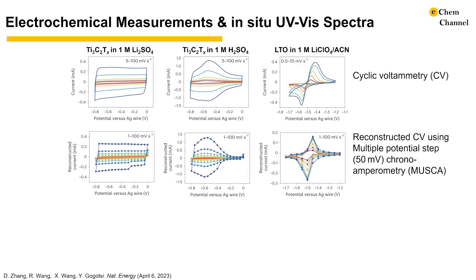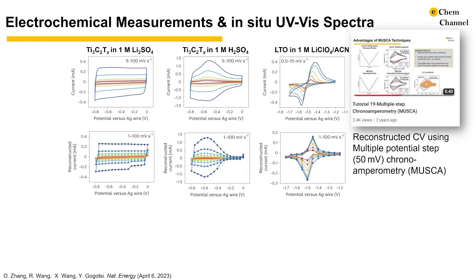To record UV-Vis spectra at different potentials, we used a stepwise potential holding protocol, or multiple-potential-step chronoamperometry, with 50 mV intervals to control the electrochemistry. This technique not only enabled full-range UV-Vis spectra collection, but also allowed for the reconstruction of voltammograms to reveal more electrochemical features similar to cyclic voltammograms. Two years ago, when we were working on this project, a tutorial for this was posted on this channel — this is a prelude to this in-situ UV-Vis study.